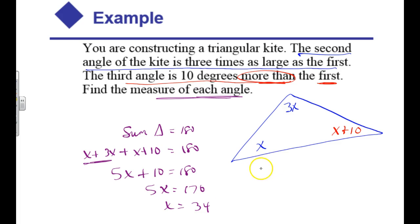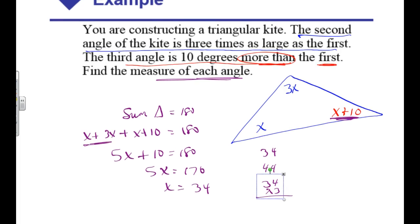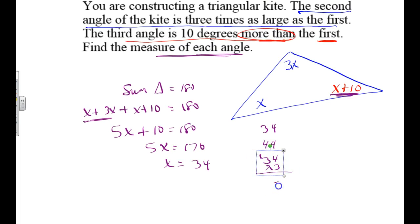If this is, let's answer the question. If one angle is 34, the other angle is going to be 44 because it's 10 more. And then the last angle is going to be 34 times 3 because I know it's 3 times the amount. So that's 102.